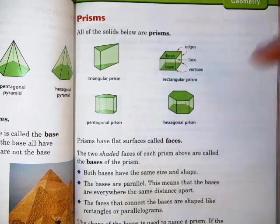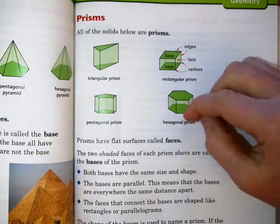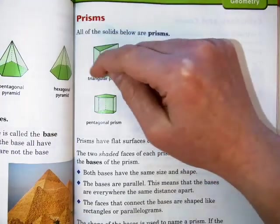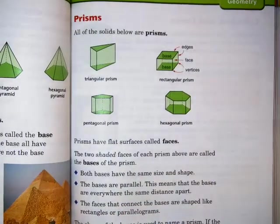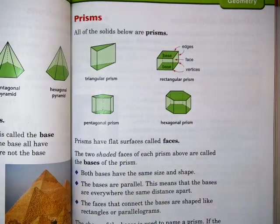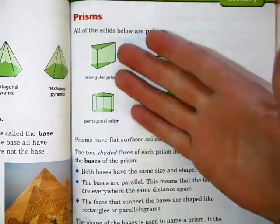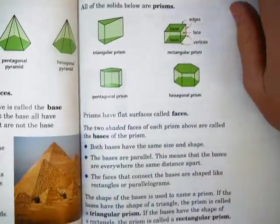The faces that connect the bases are shaped like rectangles or parallelograms. You can see these are shaped like rectangles or parallelograms, even in a triangular prism. The shape of the bases is used to name a prism. If the bases have the shape of a triangle, the prism is a triangular prism. The bases have a shape of a rectangle, it's a rectangular prism, and so on.